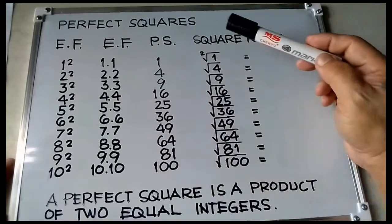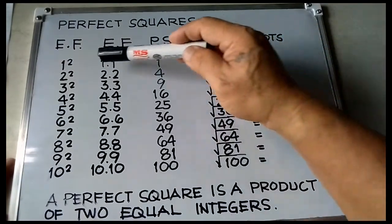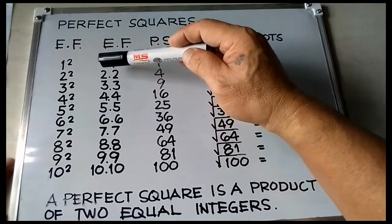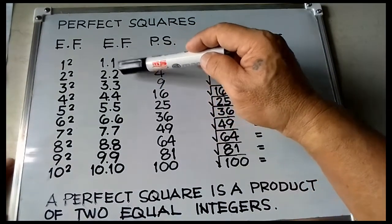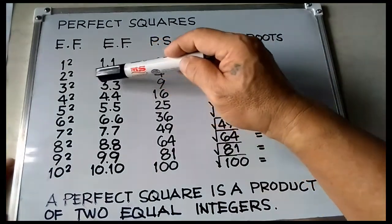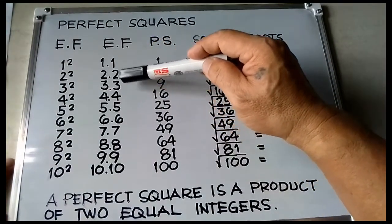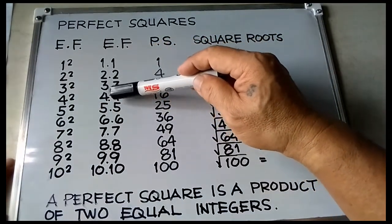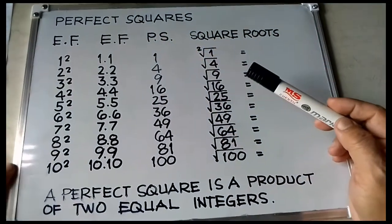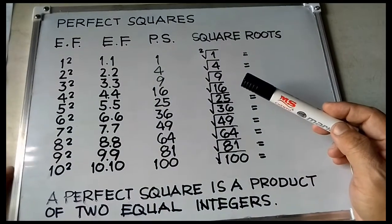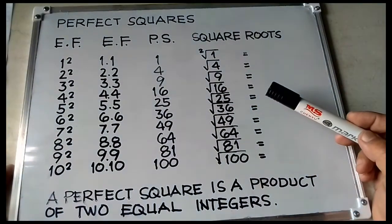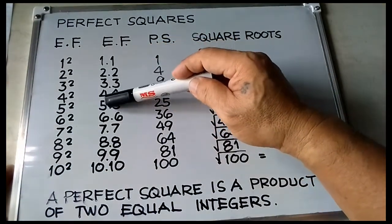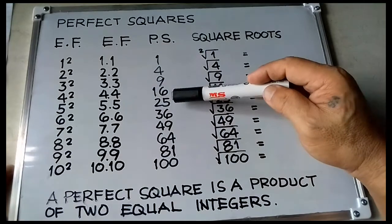1 squared is equal to 1 times 1, is equal to 1. 2 squared is equal to 2 times 2, is equal to 4. 3 squared is equal to 3 times 3, is equal to 9. 4 squared is equal to 4 times 4.